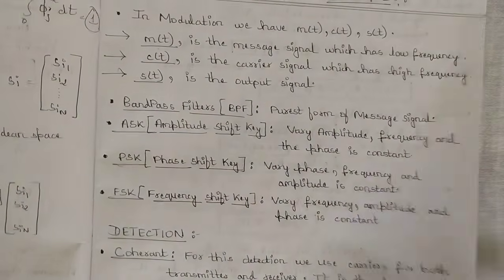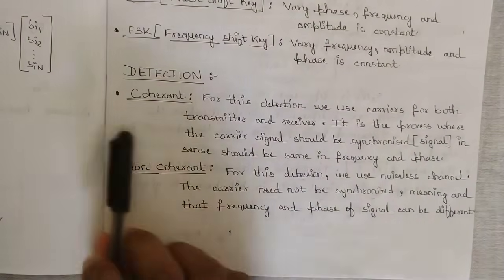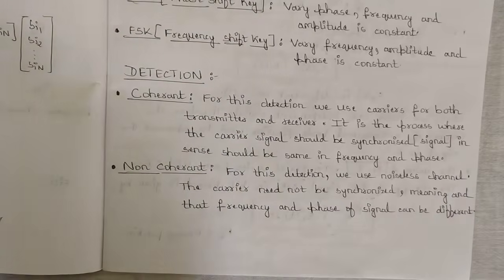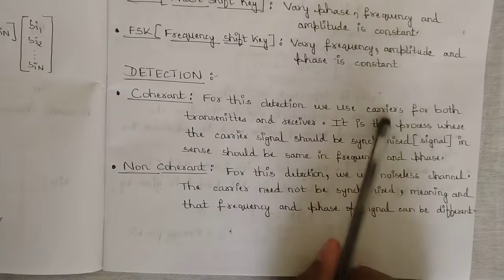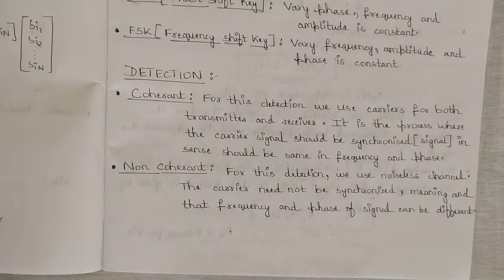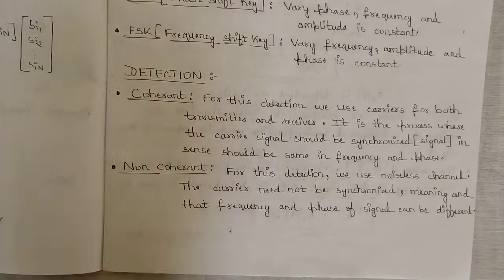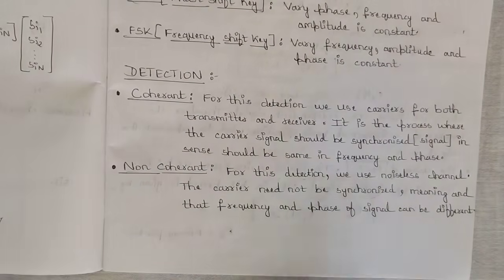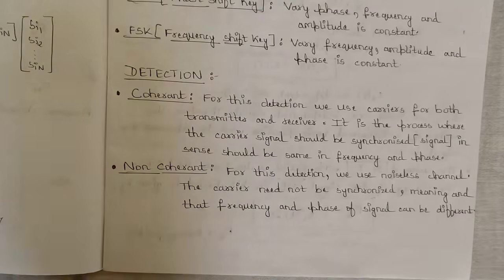Under detection, there are two categories: coherent detection and non-coherent detection. In coherent detection, carrier signals are used at both the transmitter and the receiver end. The carrier signal must be synchronized — meaning the frequency and phase must be the same at both ends — in order to maintain synchronization between the transmitter and receiver.